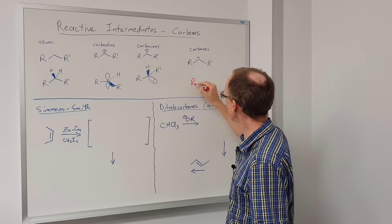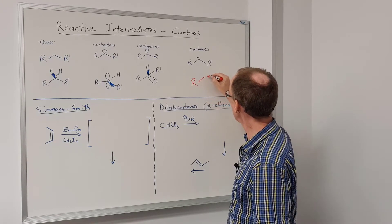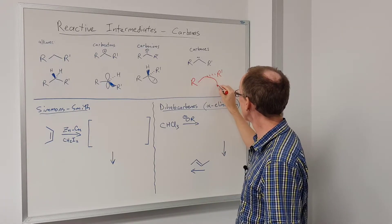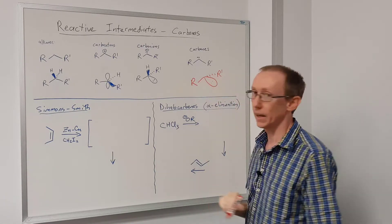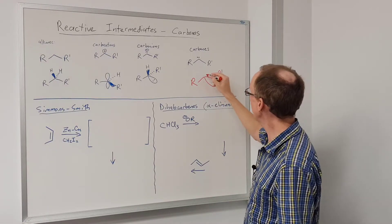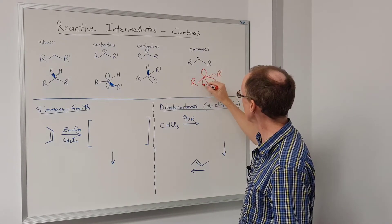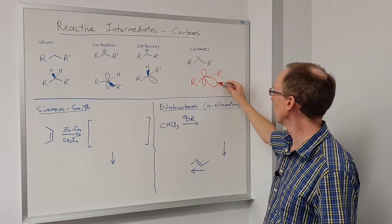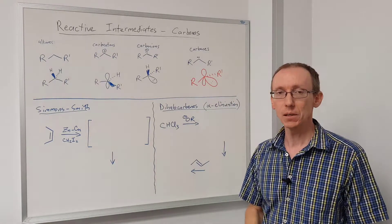We would have an R group like this and then another R group and then we would have a lone pair of electrons like a carbanion and then we would also have an empty p orbital like a carbocation. So it has both a lone pair and an empty p orbital.